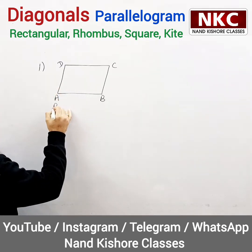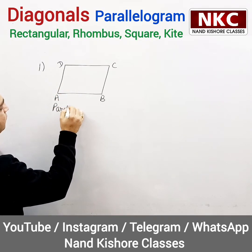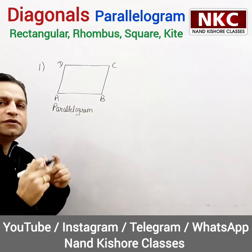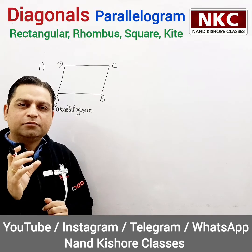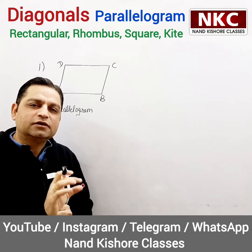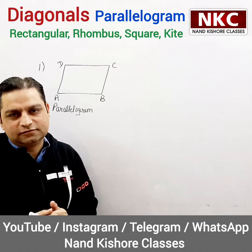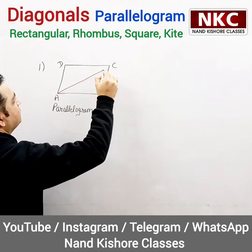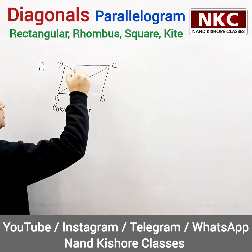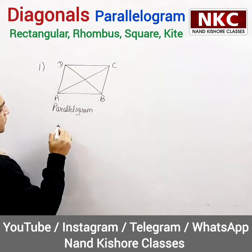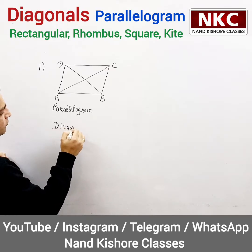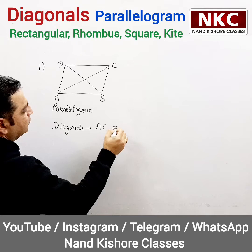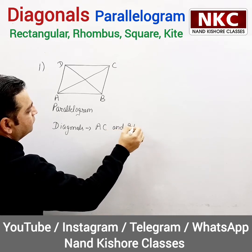The name of this shape is parallelogram. In a parallelogram, opposite sides are parallel. But in this video, we are specifically going to talk about diagonals. Diagonals means joining the opposite vertices: A and C, B and D. So one diagonal is AC and the second diagonal is BD.